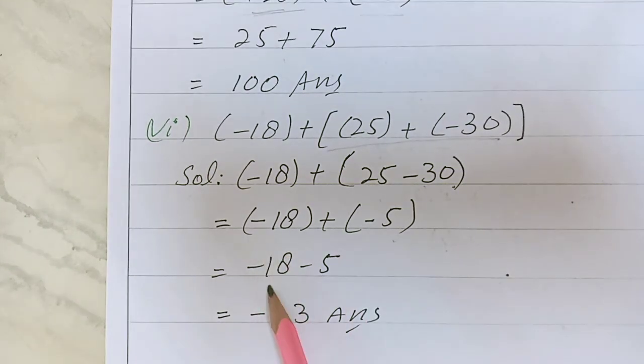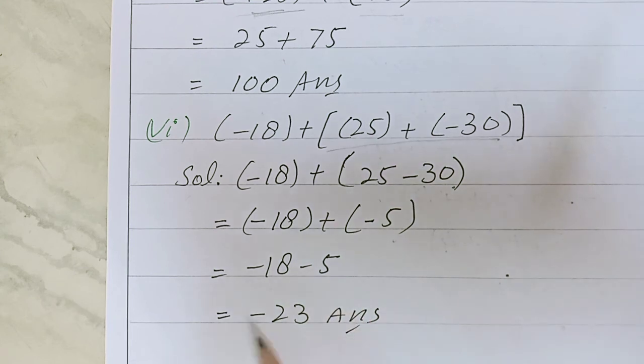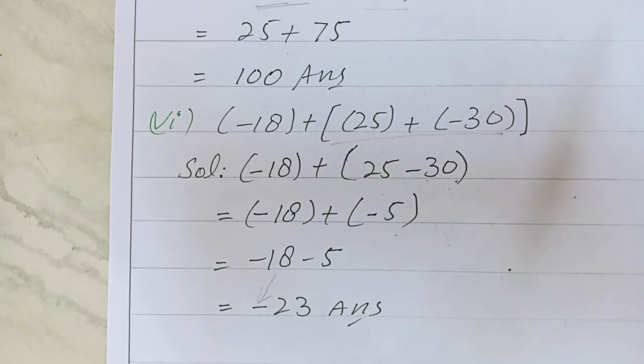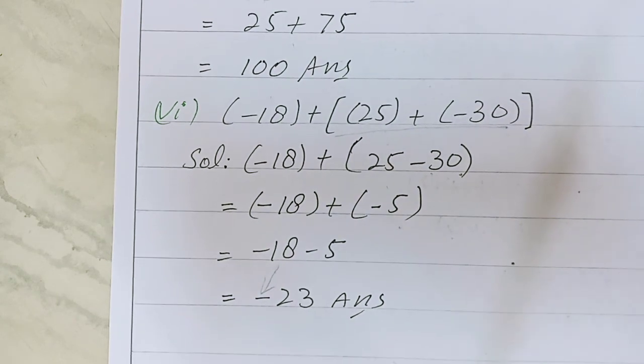Then open the brackets: -18 plus -5. So -18 minus 5 equals -23. Dear students, you will practice this question and share your problems. Take care, Allah Hafiz.